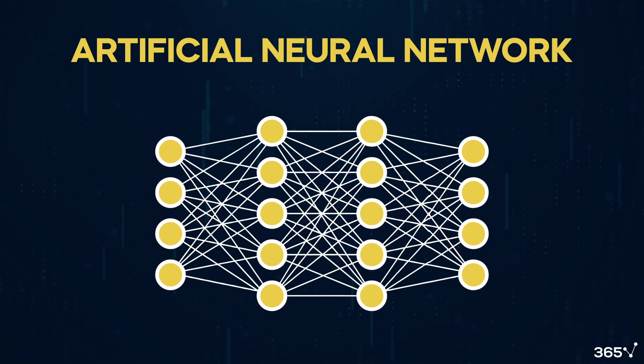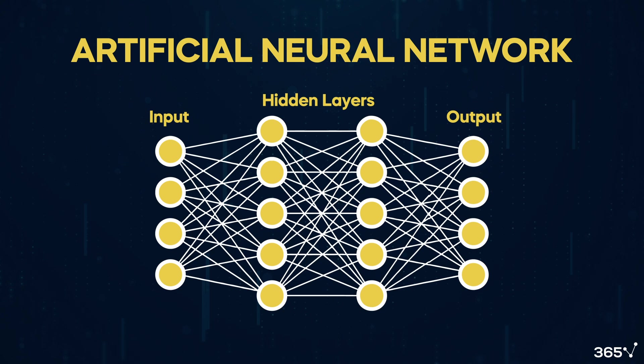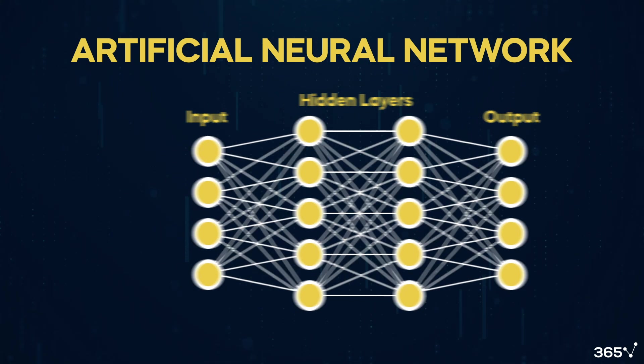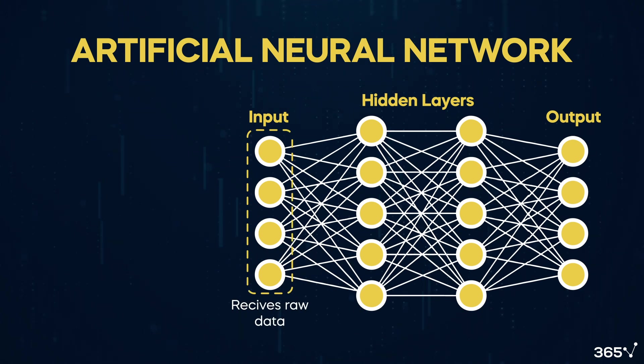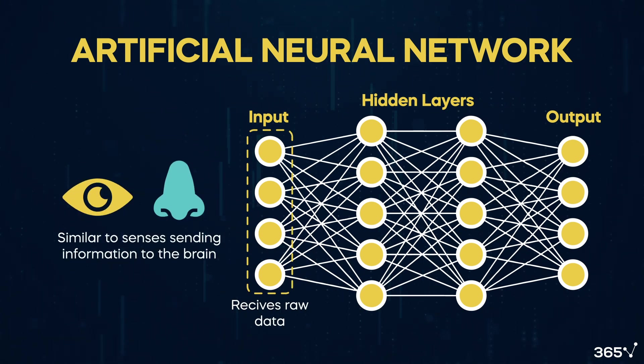We call this neural network artificial neural network, or ANN. Biological neural networks inspire it, but they work much differently. Like our senses, an ANN's input layer sends raw data to the brain.